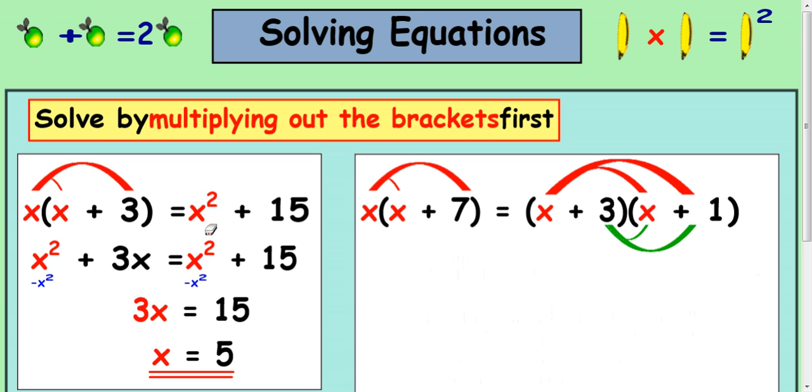Now, you can test this to see if it works. 5 squared is 25 plus 15 is 40. Let's try the other side. So 5 multiplied by 5 plus 3, that's 5 times 8, which is 40. It's correct. You can always do that if you've got time to check your answer in an exam.